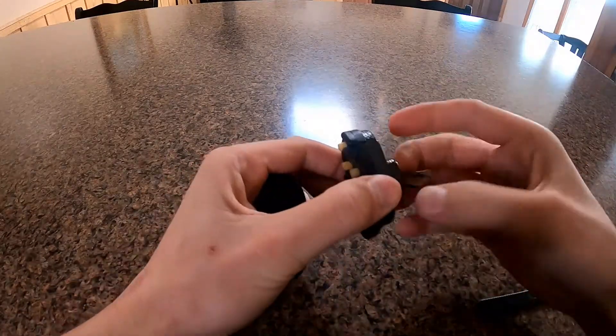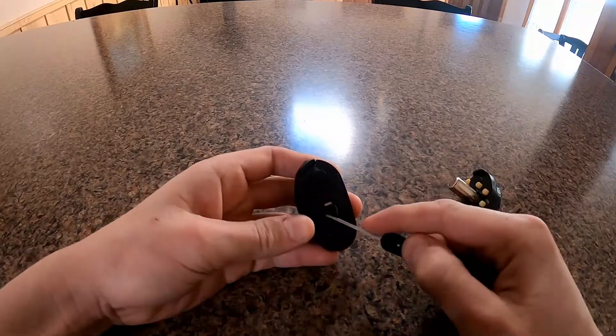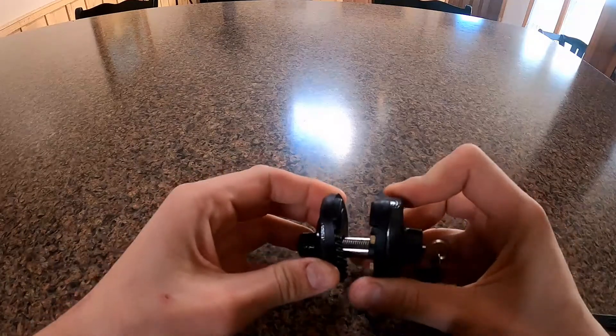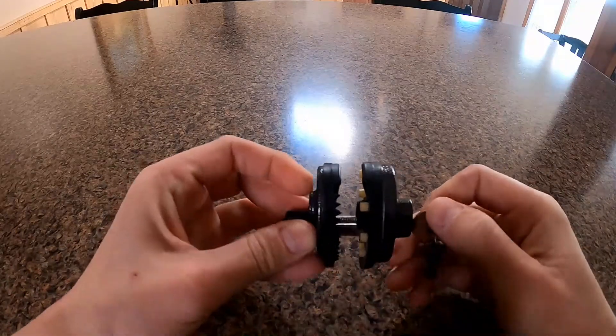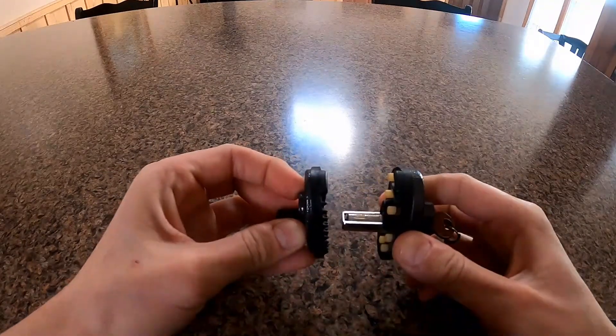Now the ratchet post has ridges that lock into the locking paw which also has ridges on it. Once the key is turned, it brings the ratchet post to a smooth position that allows it to slide open.